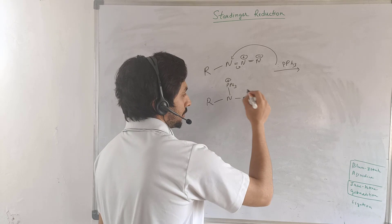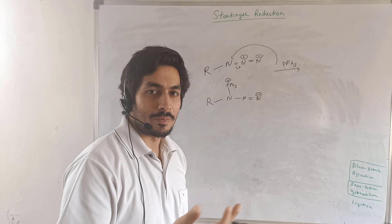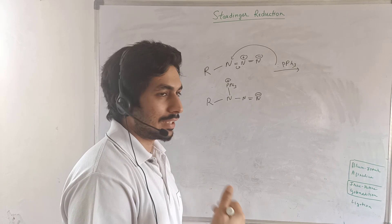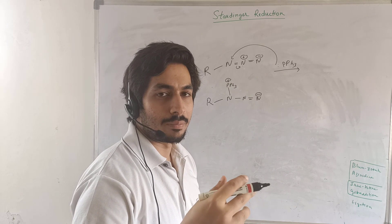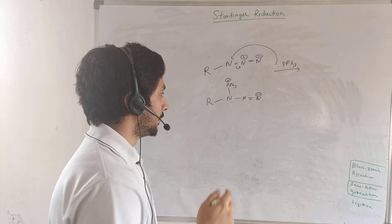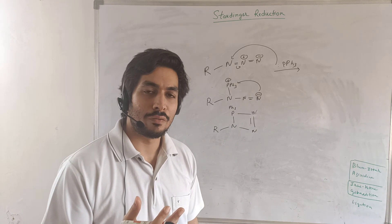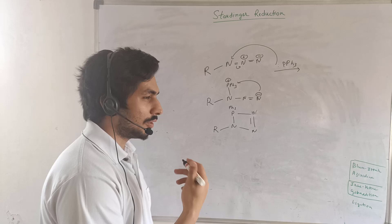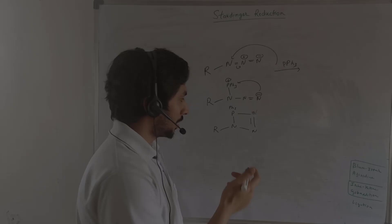This nitrogen has a negative charge and a lone pair of electrons, so it is quite eager to form a bond with any electron-deficient atom. Now phosphorus prefers either three or five bonds, and currently it has four, so this N-minus can attach to the phosphorus. This is an important step — a four-membered ring is going to be formed. Always remember: whenever there is a possibility of elimination of nitrogen gas, that is always a driving force for a reaction. Similarly, elimination of CO₂ is also a strong driving force.